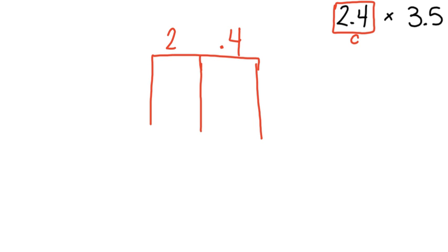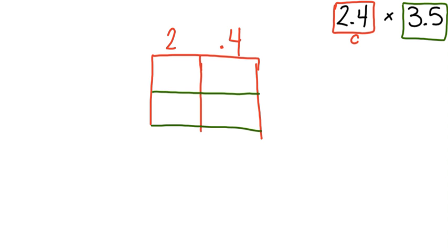Now I am going to look at my second number, 3 and 5 tenths. I know that there are two digits in that number so I am going to have two rows, one for each digit in my number. I am now going to expand 3 and 5 tenths to 3 wholes and 5 tenths.